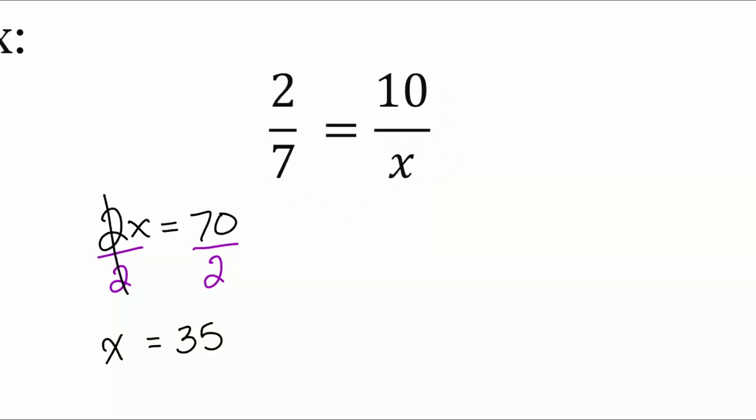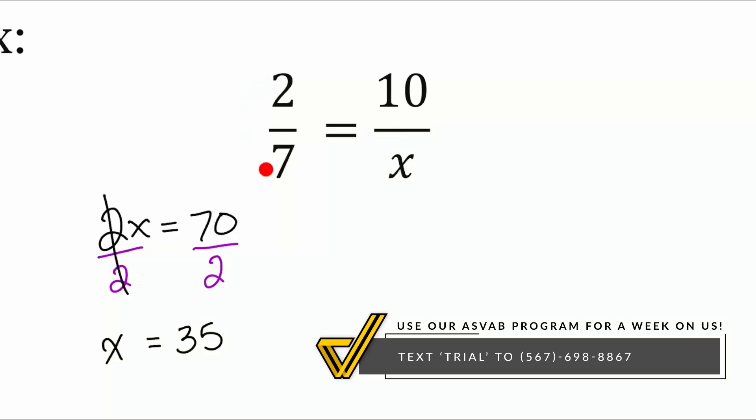First, you tell me, is there an easy whole number that can get me from 2 to 7? Is there an easy whole number that I can multiply 2 by to get to 7? No, there isn't. There's not a whole number that I can use.